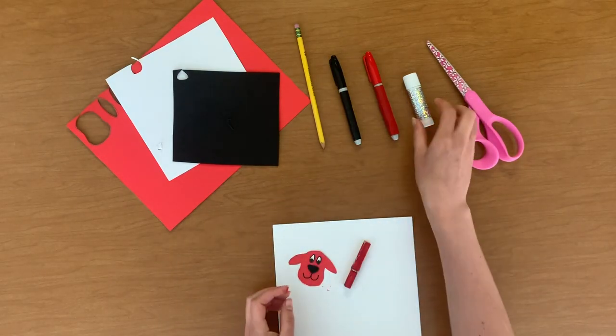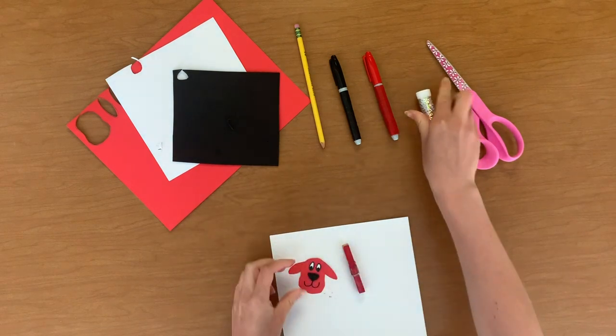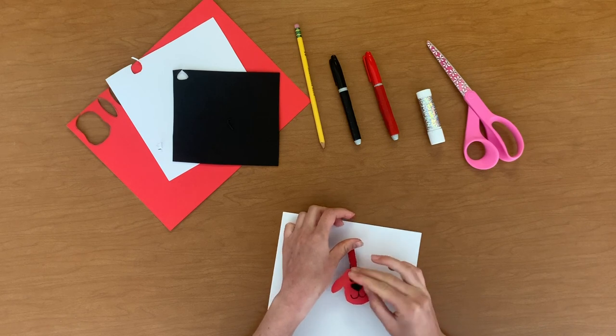Last but not least, use a generous amount of glue to attach Clifford's head to the side of the clothespin that is tightly fastened. Press firmly down to secure Clifford's head to the clothespin, and voila!